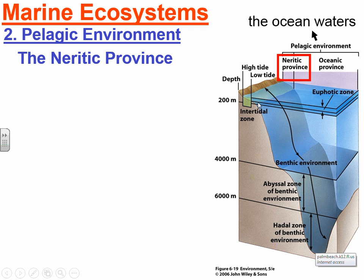The next major zone is the pelagic environment, which runs from the shoreline throughout the open ocean. It has a major life zone called the euphotic zone — the top portion of the ocean. You can see the term 'photic,' meaning light penetrates throughout this zone. Because we have light penetration, we'll have a lot of phytoplankton surviving in the euphotic zone.